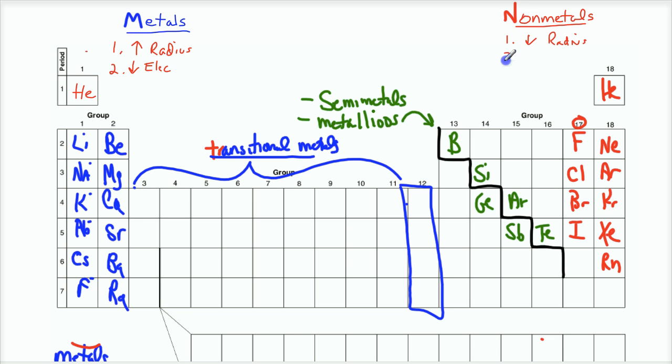Of course, non-metals, being smaller, have a high attraction. The reason why they are small is they pull in those electrons. So higher electronegativity. That should be number two there.